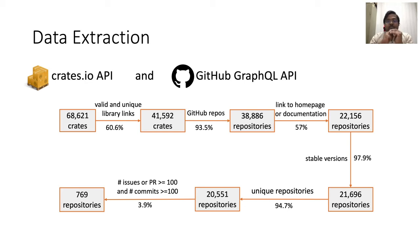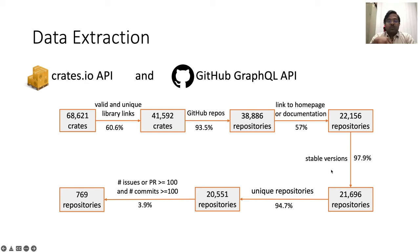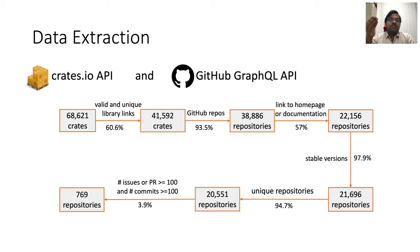We further filtered to find which software packages have good documentation or a homepage, resulting in around 22,000 repositories. We also filtered for stable versions — meaning software versions not labeled as alpha or beta and not at version 0.0.0 — finding around 97 stable version packages. We then collected unique repositories, since different folders in a single repository could be linked to different Cargo packages, arriving at around 20,000 unique repositories.